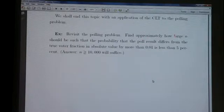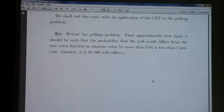So find approximately how large a group we should interview, how large N should be, such that the probability that the poll result differs from the true voter fraction in absolute value by more than 0.01 is less than 5%.